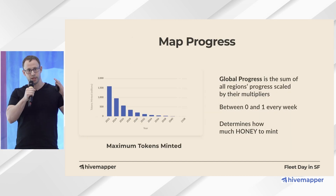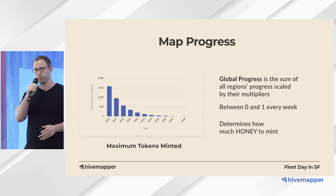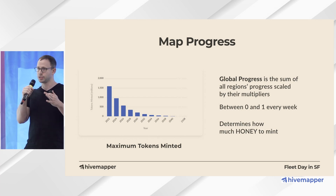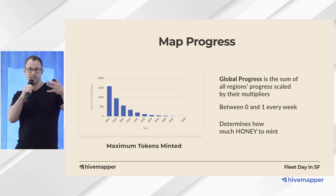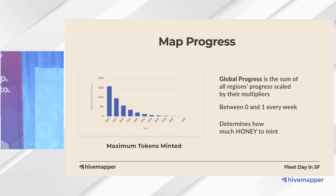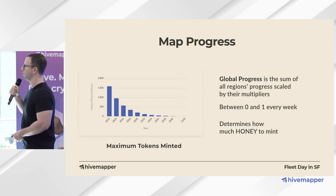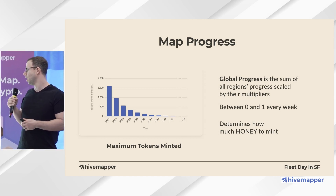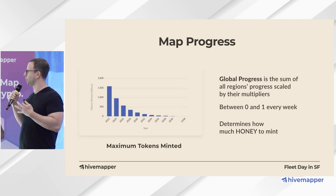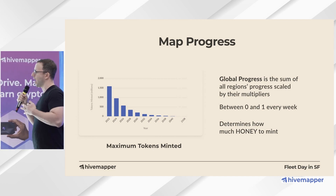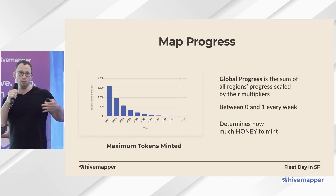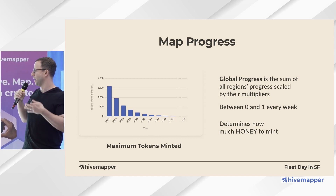Map progress is what really drives the speed at which these rewards are minted and distributed to contributors. Every week each region's progress is tallied up, and that determines how many honey tokens are minted and distributed to all the contributors in those regions. This chart shows a maximum speed limit. The reason we do this is because we want to be fair — we want to make sure any early adopter is heavily rewarded, but we don't want to penalize anybody who doesn't have access or hasn't been onboarded yet. This whole system allows us to balance both really elegantly.